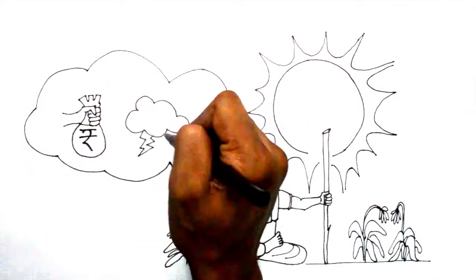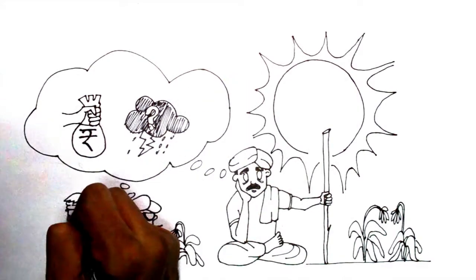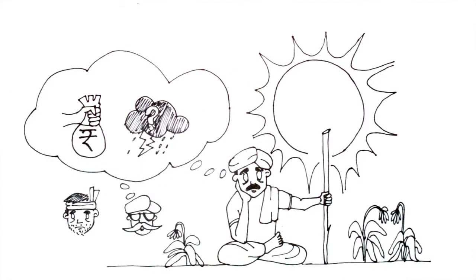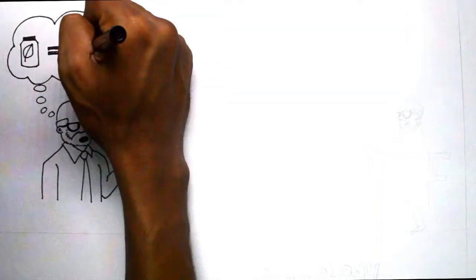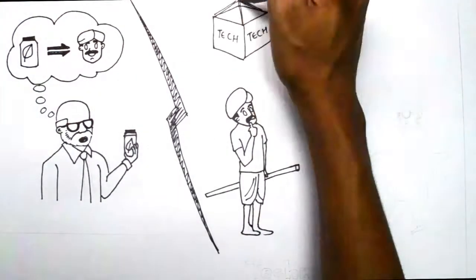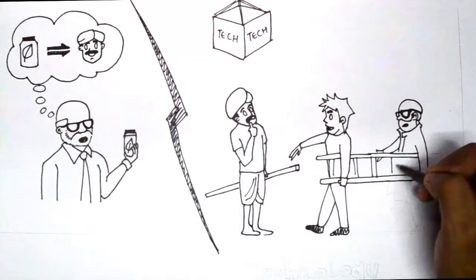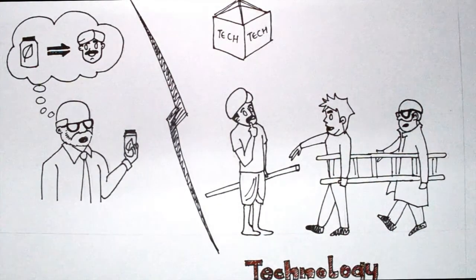And Ramchandh is not the only one. There are many like him who struggle to sustain their farming. But how many of us even know what problems they face? Can science and technology be used to bring about a significant change in their lives? How can we take innovative technology to people like Ramchandh?